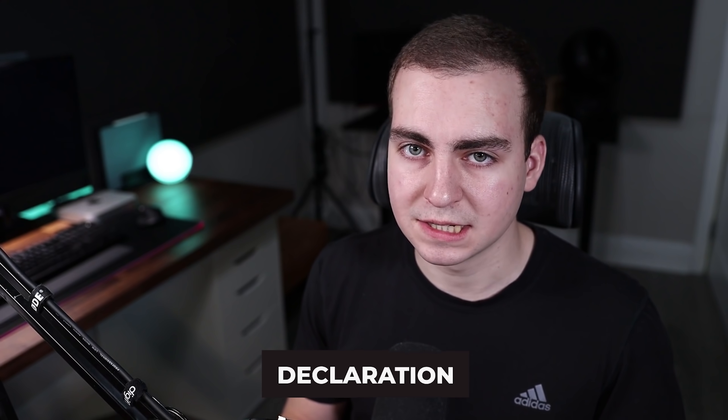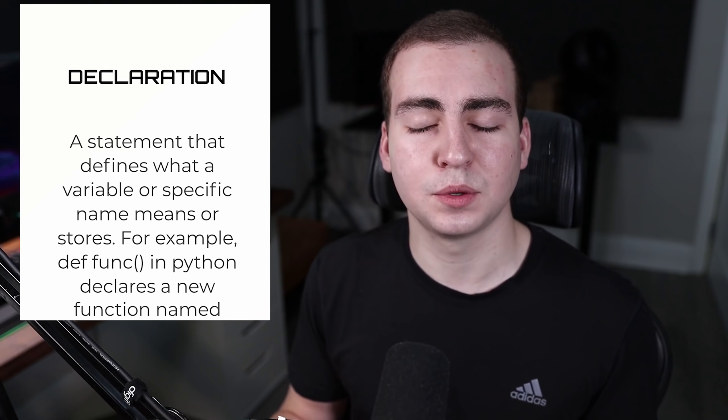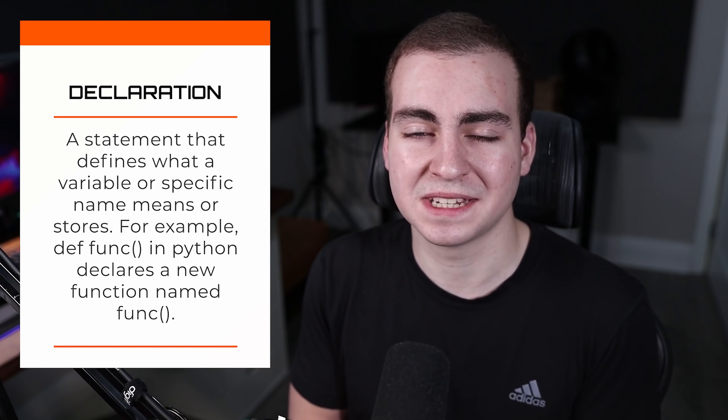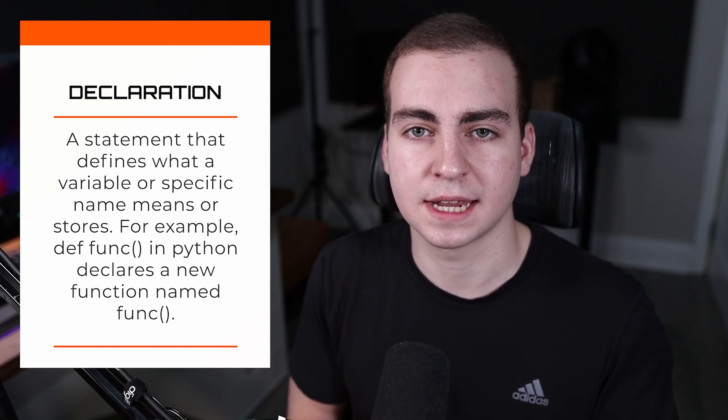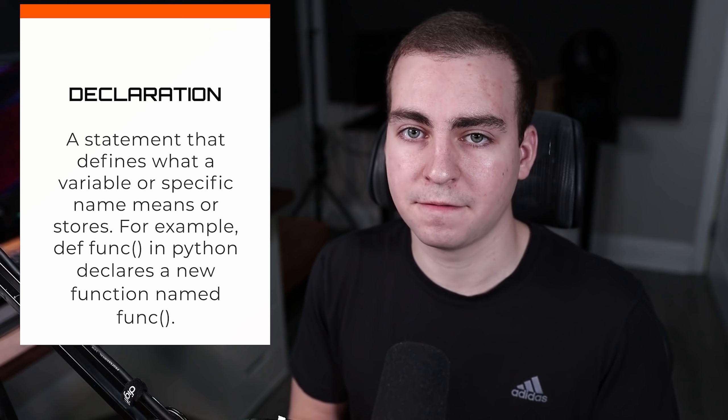The next term is declaration — one that I misuse all the time. A declaration is simply a statement that defines what a variable or a specific name means in the context of your program. So if I declared a function and wrote 'def funk():' in Python, that would be me declaring that a function has a specific function body. Same thing with a variable: if I did 'x = 2', I am declaring that x is equal to two — assigning the value two to the variable x.